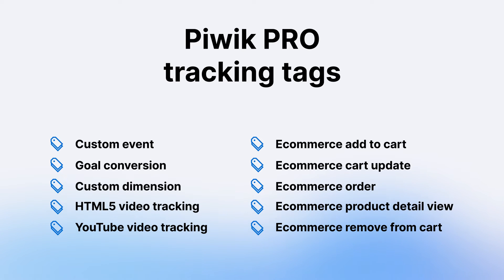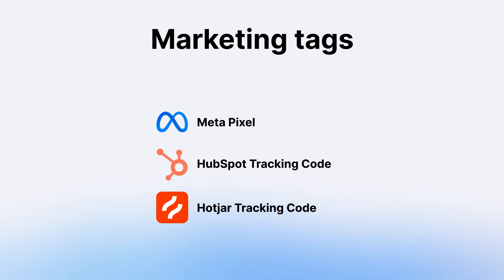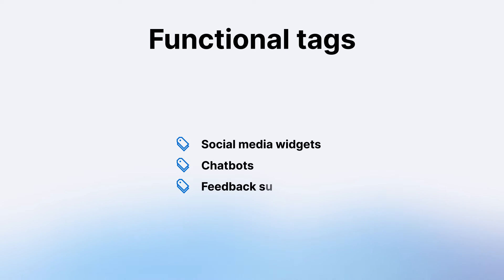Then we have another category: marketing tags. Those would be third-party tags — tags not related to PIVIC PRO analytics — such as Facebook MetaPixel tag, HubSpot tracking code, Hotjar tracking code, and so on. They still track data, but the data is not necessarily sent to our PIVIC PRO platform. Finally, we have functional tags, perhaps used less frequently, but those add specific functionality to a site, like social media widgets, chatbots, or feedback surveys. Using Tag Manager, we can add these easily without editing the website source code. We're going to expand on different types of tags in another video — I will add the link in the description below.